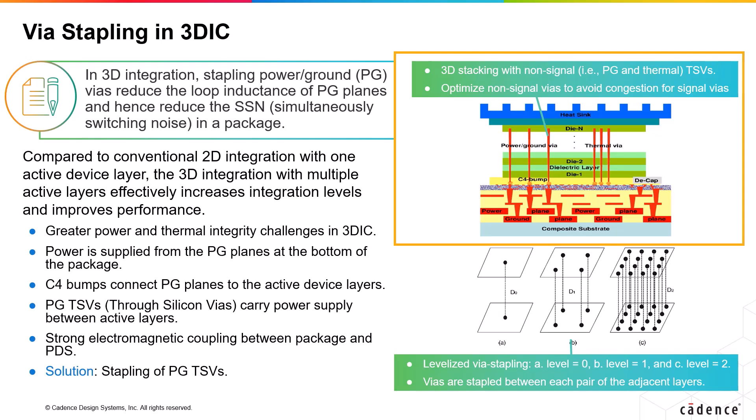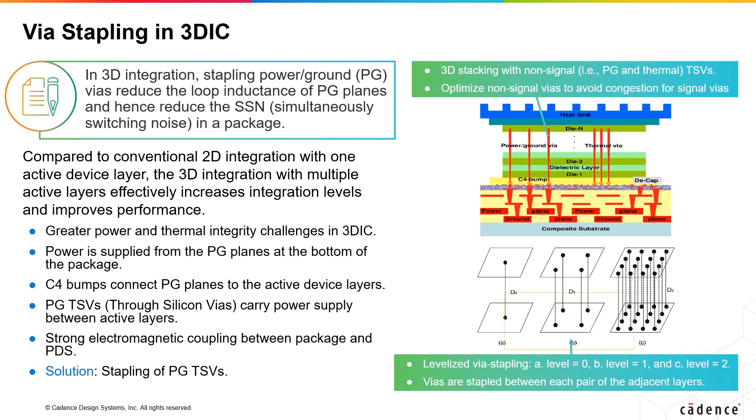Due to the increased power density at lower nodes, heat dissipation is extremely important in 3DICs from a reliability and performance perspective. Since VIAs are good thermal conductors as well, adding through VIAs as thermal VIAs between device layers is effective to remove heat. Designers generally call power-ground and thermal VIAs as non-signal VIAs, and VIA stapling is generally done for both. The picture below depicts the levelized VIA stapling to describe VIA patterns, where VIAs are stapled between each pair of adjacent layers.